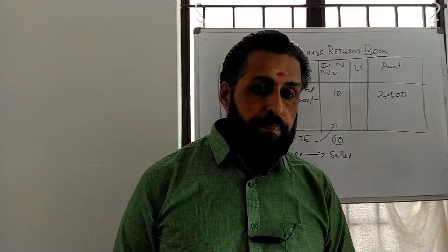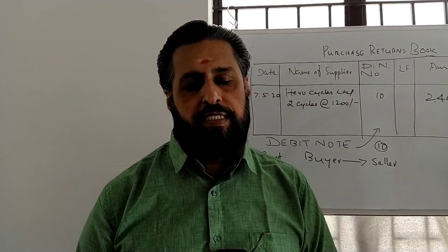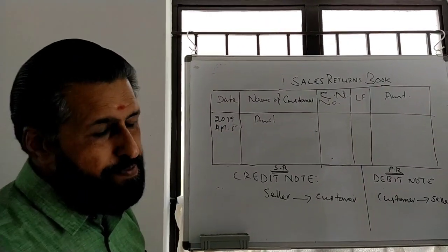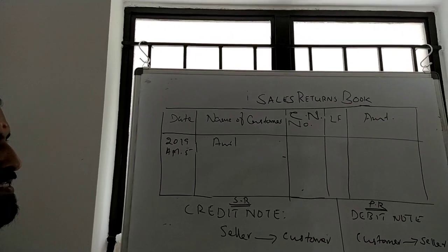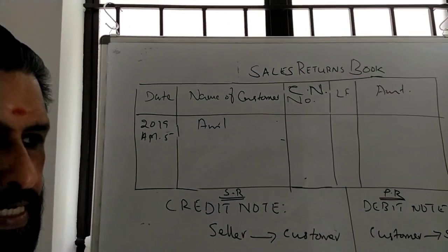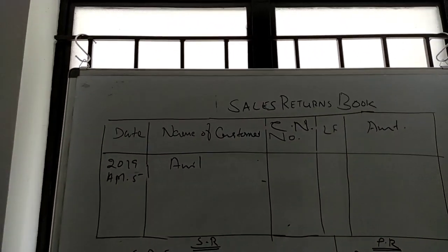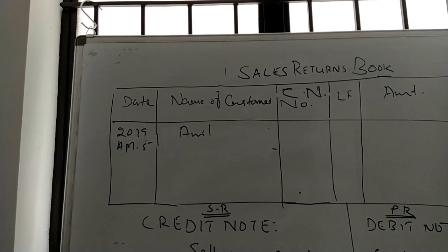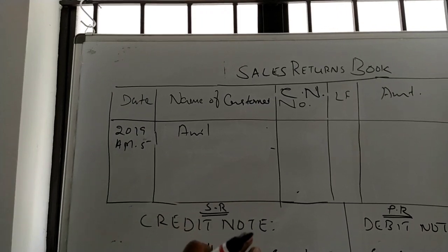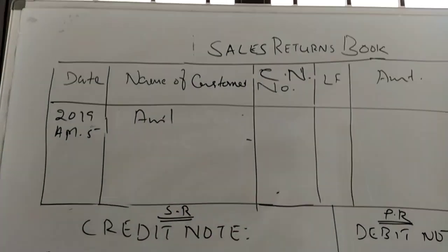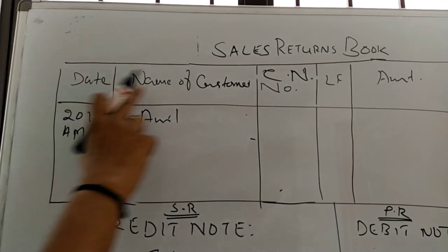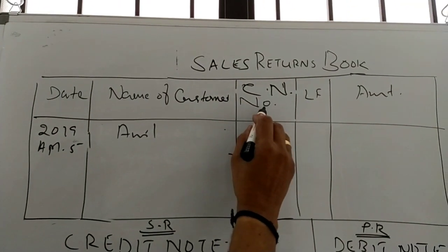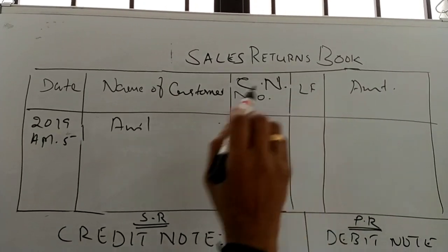This is Sales Returns. If you go to Sales Returns, when you come to Sales Returns, the customer will understand the details. This is a Sales Returns book. The format includes: Name of Customer, Credit Note Number, Ledger Folio, Amount.